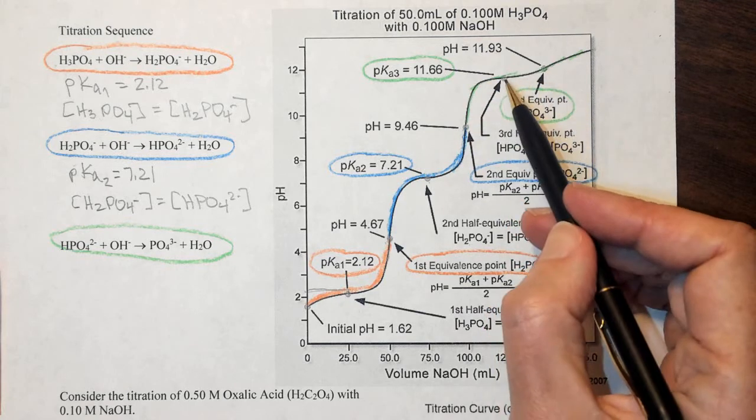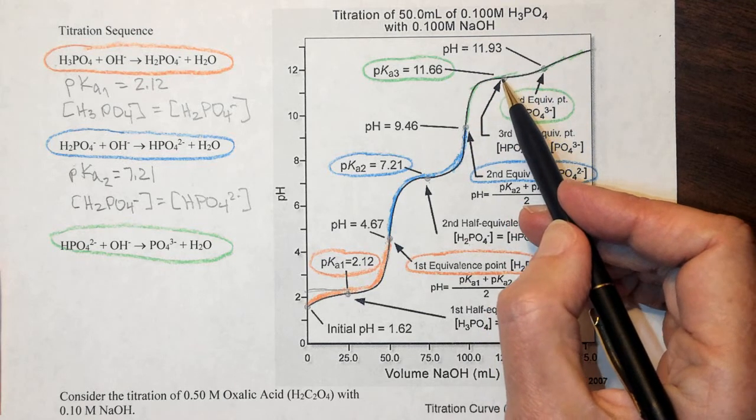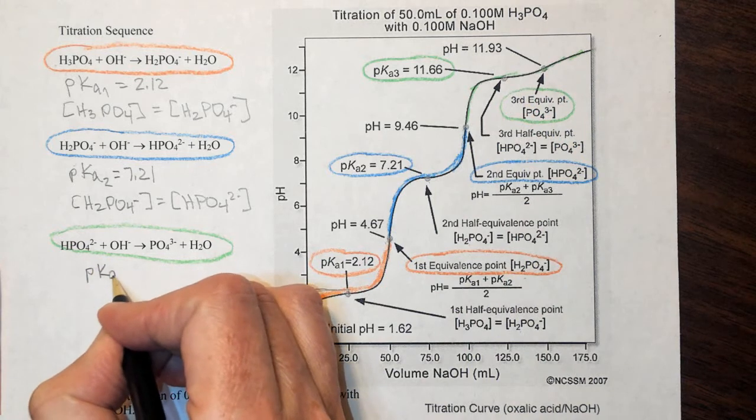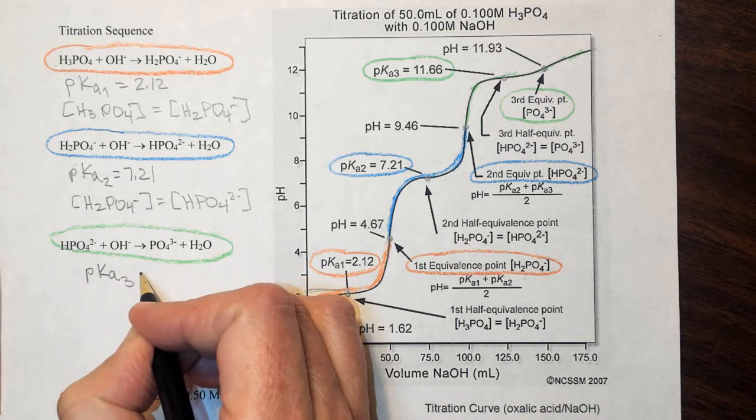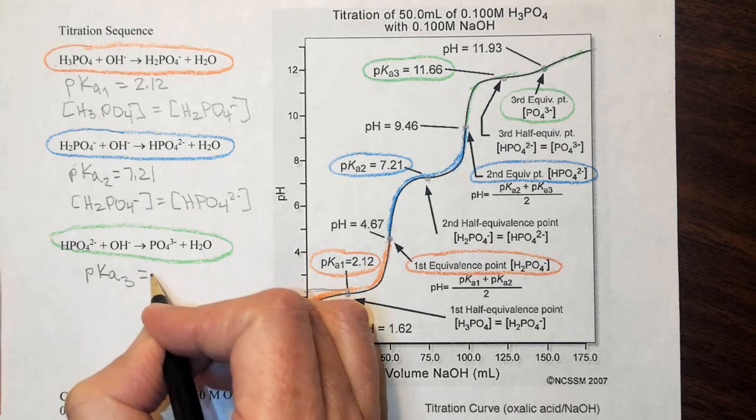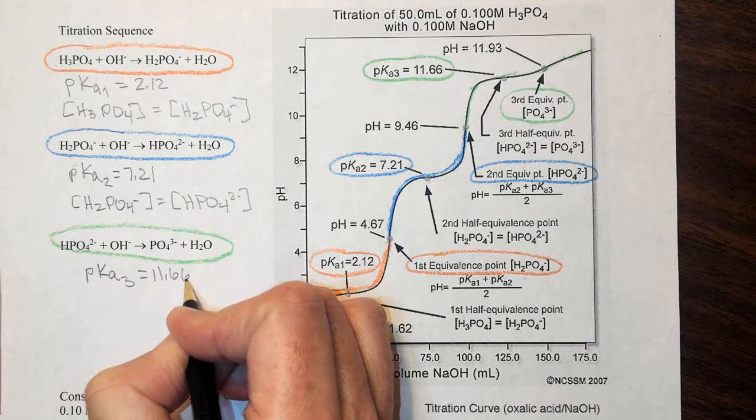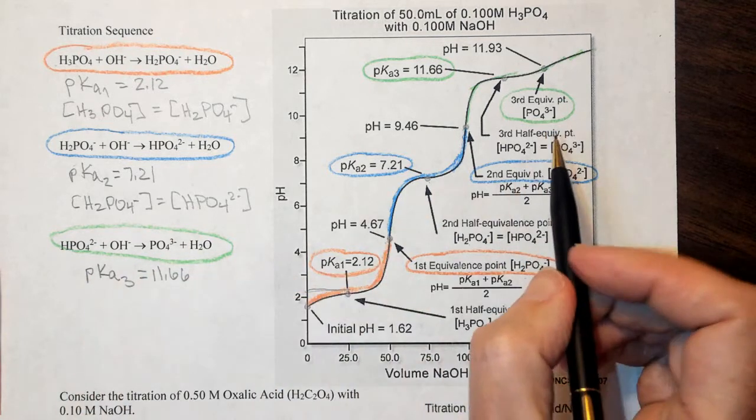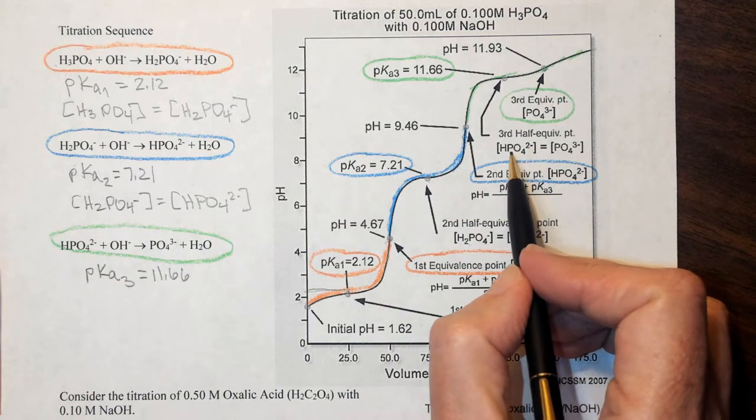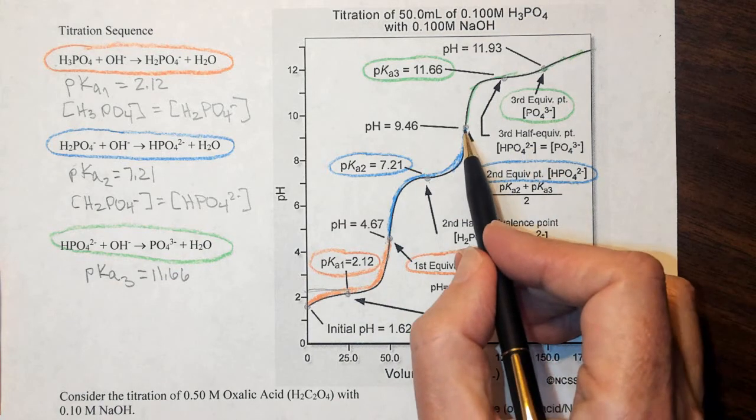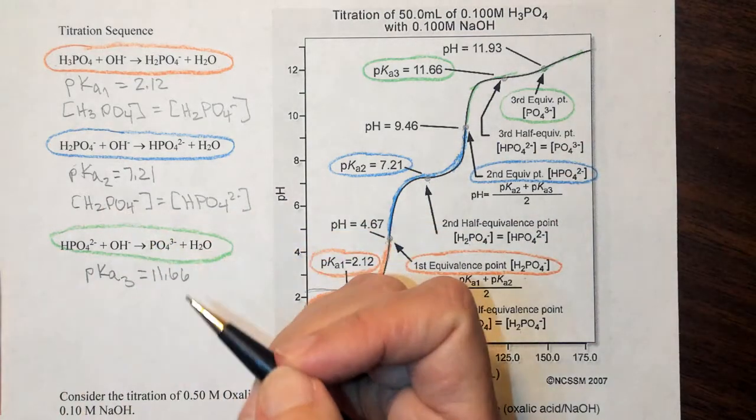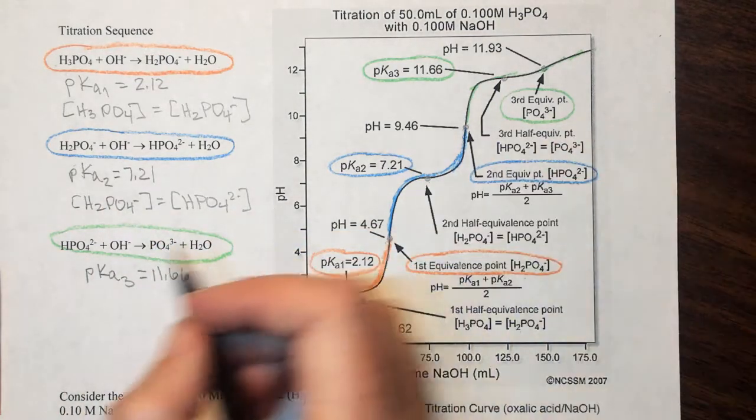And there is our third half equivalence point where pKa3 is equal to 11.66. And our major species that are present are going to be HPO4 2 minus, because that's all that was present here, and PO4 3 minus.